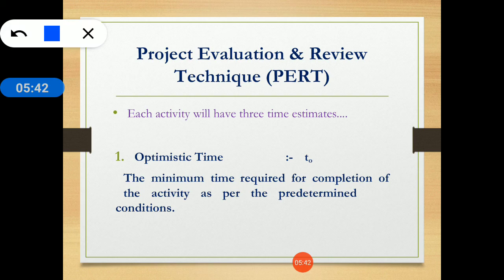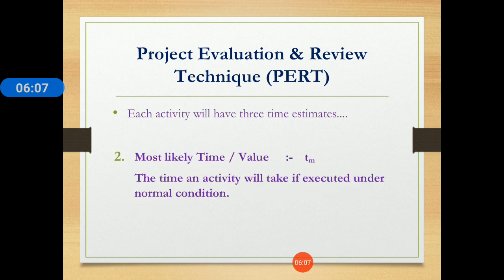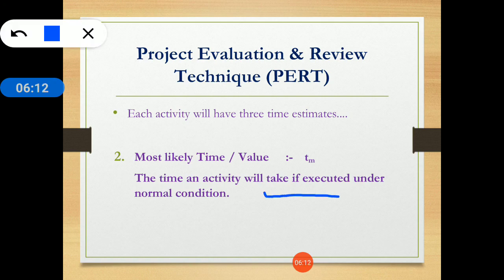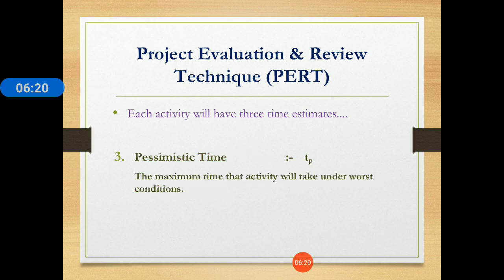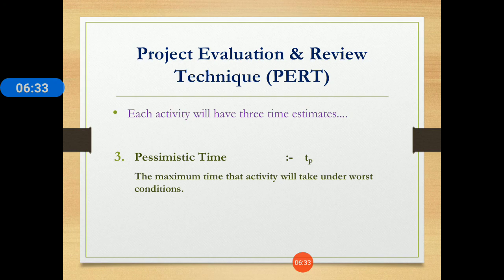Optimistic time is the minimum time required for completion of an activity under predetermined favorable conditions — the shortest time you expect the activity to finish. Most likely time is the time the activity will take if executed under normal conditions, meaning the average time. Pessimistic time is the maximum time the activity will take under the worst conditions — if any worst-case condition occurs and the activity finishes in the maximum time, that time is called pessimistic time.